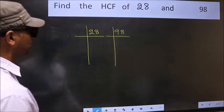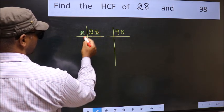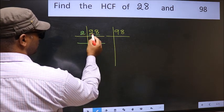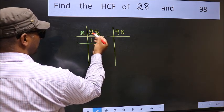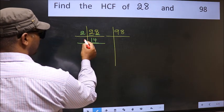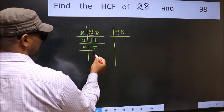Next, in this number, last digit 8 is even, so take 2. First number 2, when do we get 2 in 2 table? 2 ones 2. The other number 8, when do we get 8 in 2 table? 2 fours 8. Now 14 is 2 sevens 14. 7 is a prime number, so 7 ones 7.